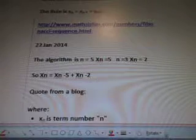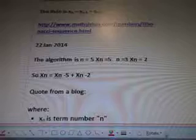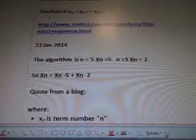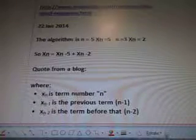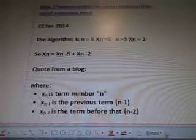www.mathisfun.com. So, January 22, 2014, the algorithm is N equals 5, X_N equals 5, N equals 3, X_N equals 2. Because you're minusing minus 1 and then you're minus 2. So, X_N equals X_(N minus 5) plus X_(N minus 2).